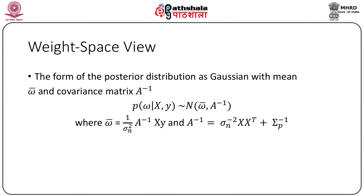ω̄ and A^{-1} can be expressed in closed form. In a non-Bayesian setting, the negative log prior is sometimes thought of as a penalty term, and the maximum a posteriori (MAP) estimate is known as the penalized maximum likelihood estimate of the weights. This penalized maximum likelihood procedure is known as ridge regression (Hoerl and Kennard, 1970), due to the effect of the quadratic penalty term ½ ω^T Σ_p^{-1} ω from the log prior.